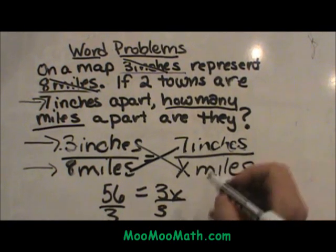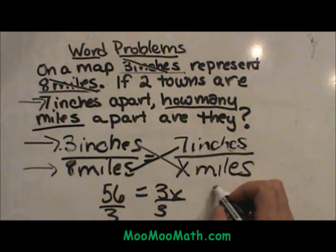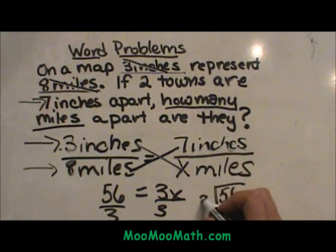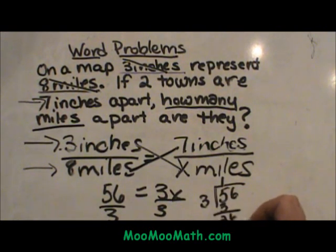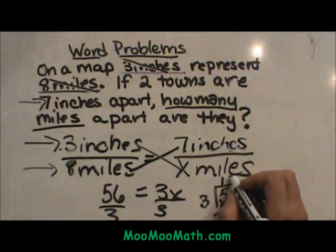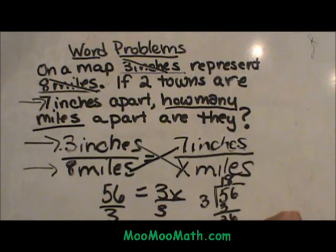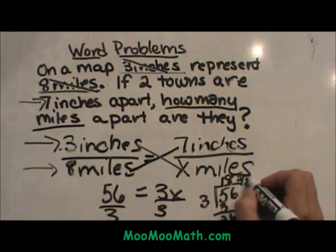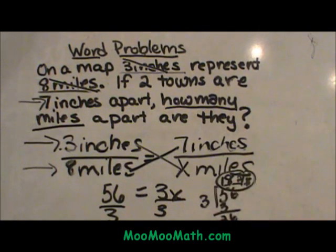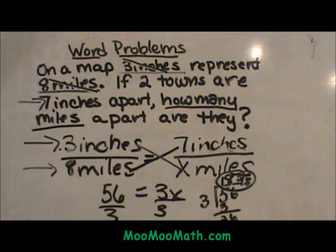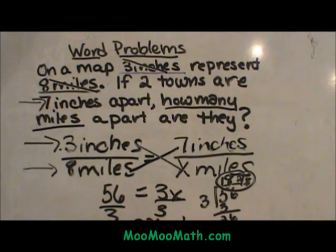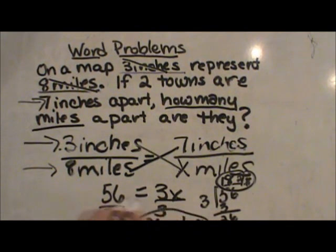So let's go over here and take 56 divided by 3. 3 goes into 26 eight times with two remaining. So that means the answer is 18 and 2 thirds. That is how many miles apart our two towns are: 18 and 2 thirds miles. Hope this was helpful.